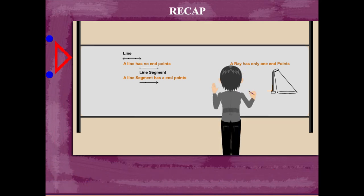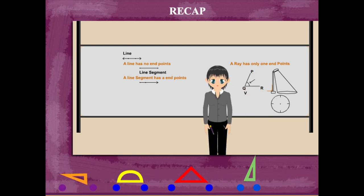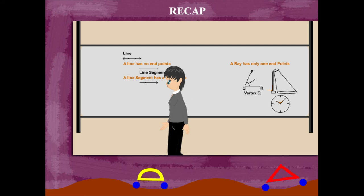When two rays meet or end at a single point, they form an angle between them.